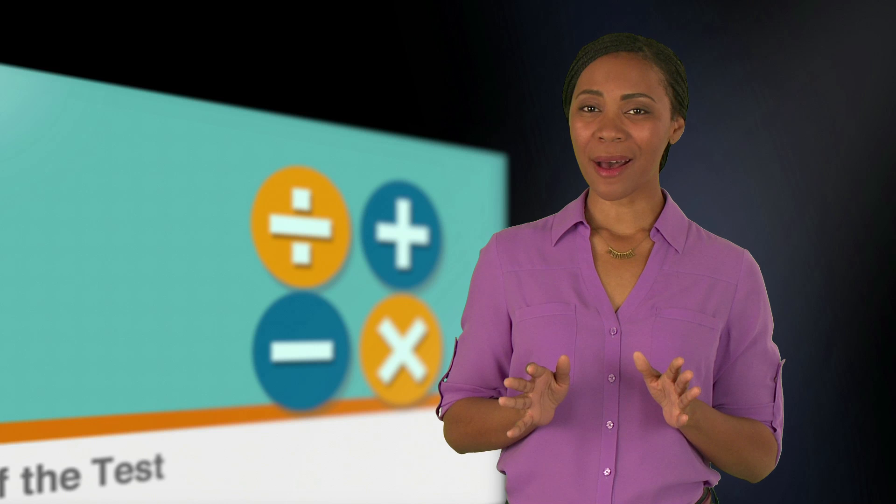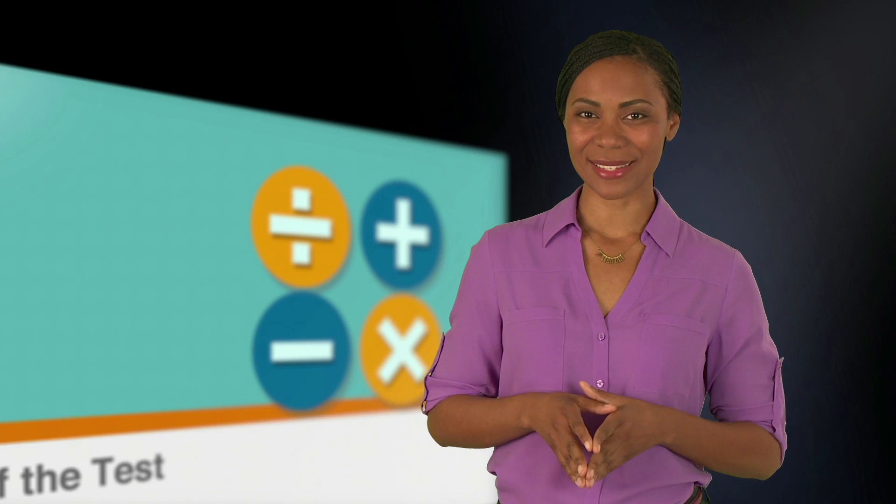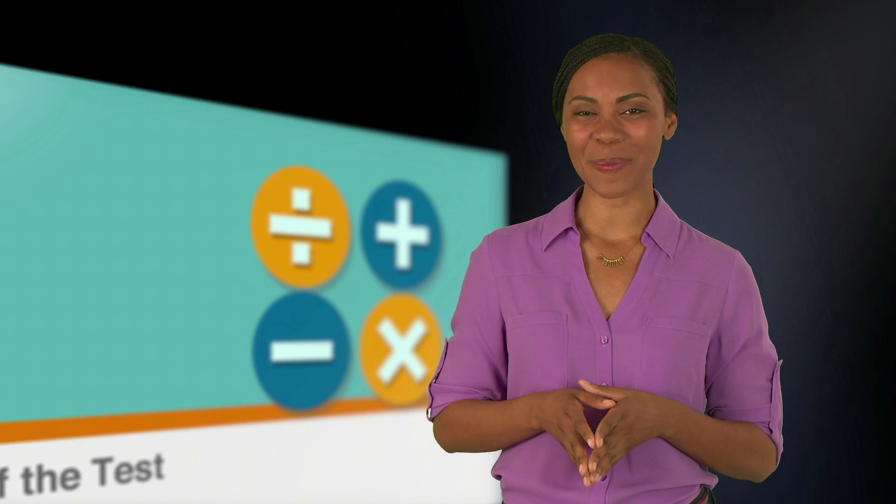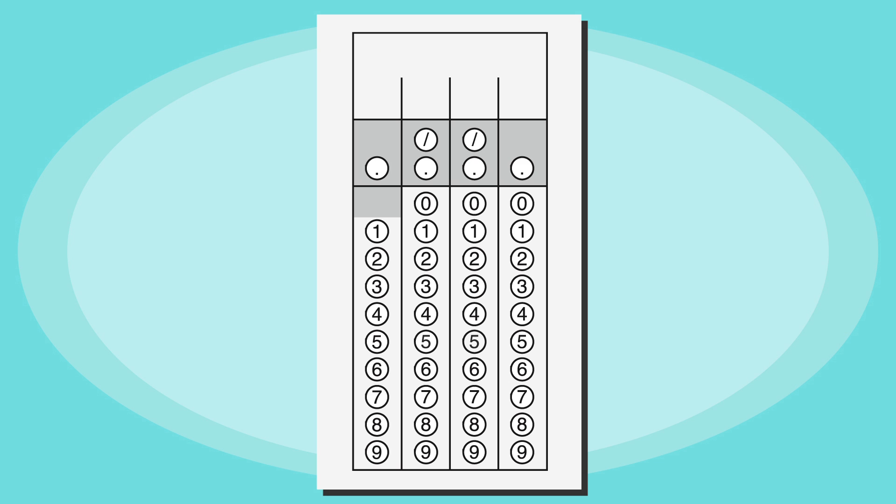You might have paused at hearing grid-in questions. It sounds a little intense, but actually it just involves one more step in how you enter your answers. The grid-ins look like this. You'll have number bubbles for 0 through 9, symbol bubbles for decimals, and slashes for fractions.